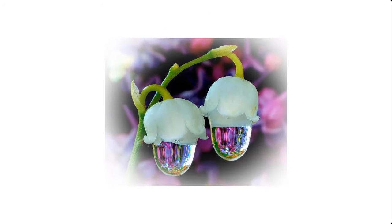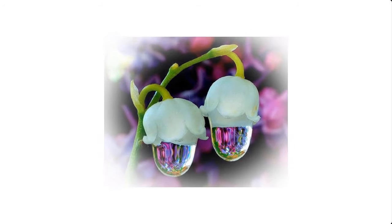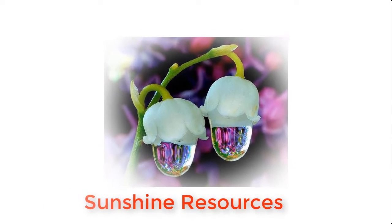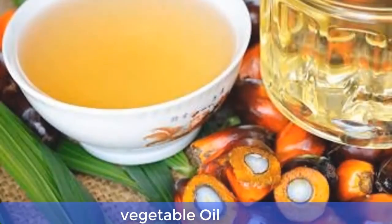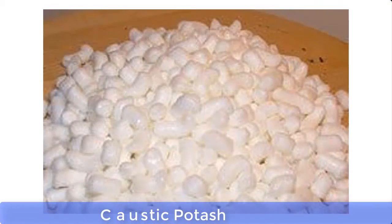Hello and welcome. My name is Sunshine, the project manager of Sunshine Resources. In this video I'm going to show you how to make liquid soap with just two materials, and these are vegetable oil and caustic potash.